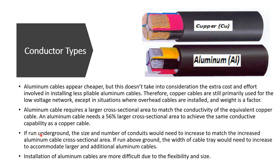When running aluminum cables underground in a low voltage network, two problems arise: first, the size and number of conduits required increases because aluminum cables have a larger cross-sectional area; second, above-ground installations require larger cable trays to accommodate the bigger aluminum cables. That is why copper cables are preferred in the low voltage network.